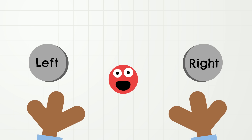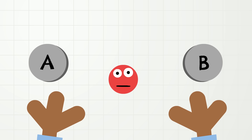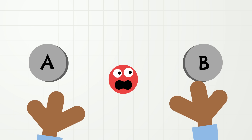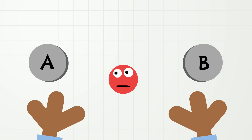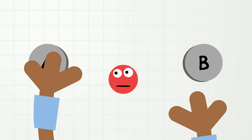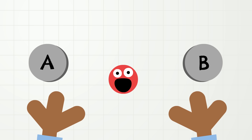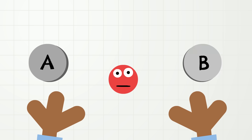Now instead of saying left and right, raise the same hands but say A and B. Ready? Go! A, B, A, B, A, B, A, B. Wow, good job! A and B repeat in the same order, so that was a pattern. And a pattern that has two things that repeat like that is also called an A-B pattern.